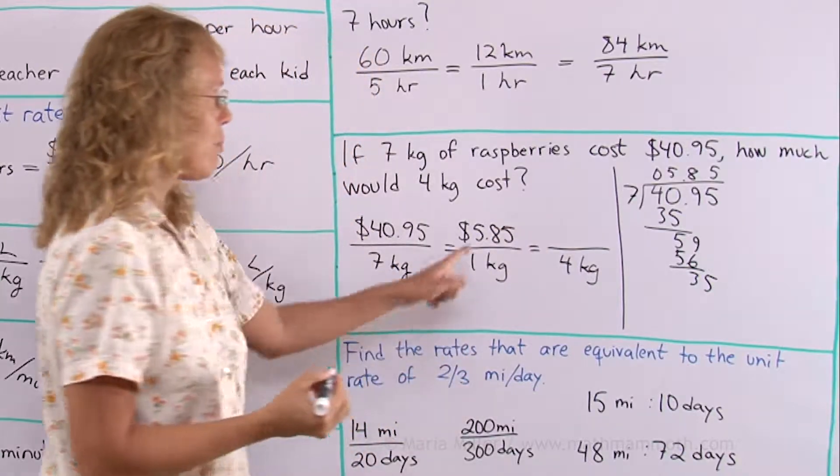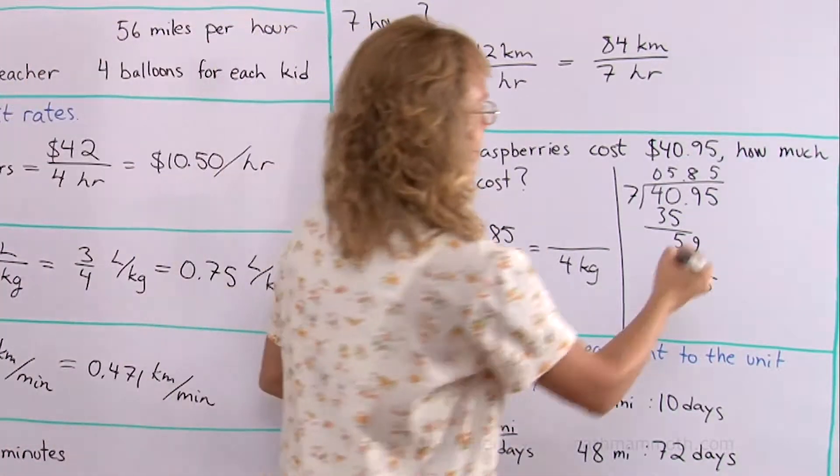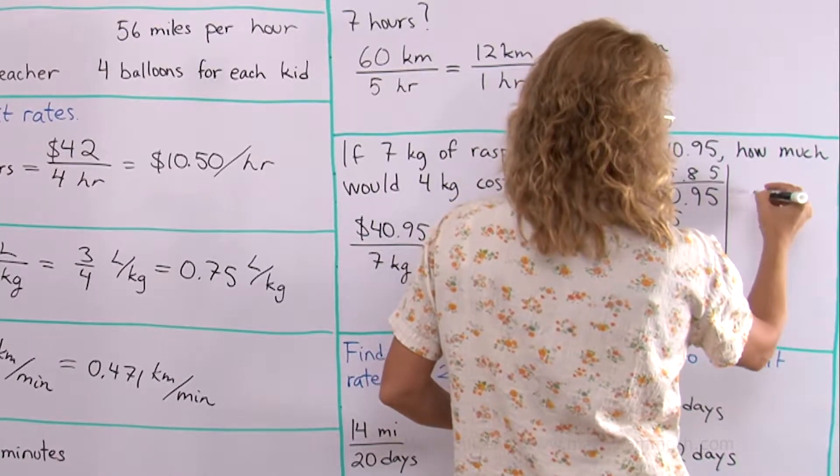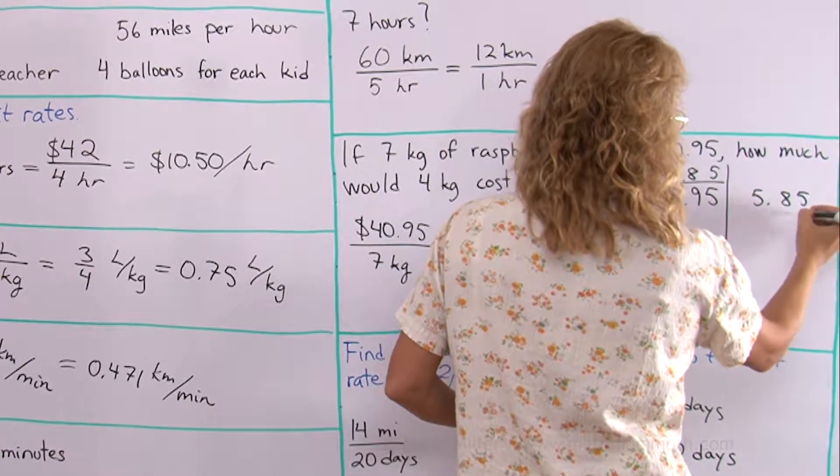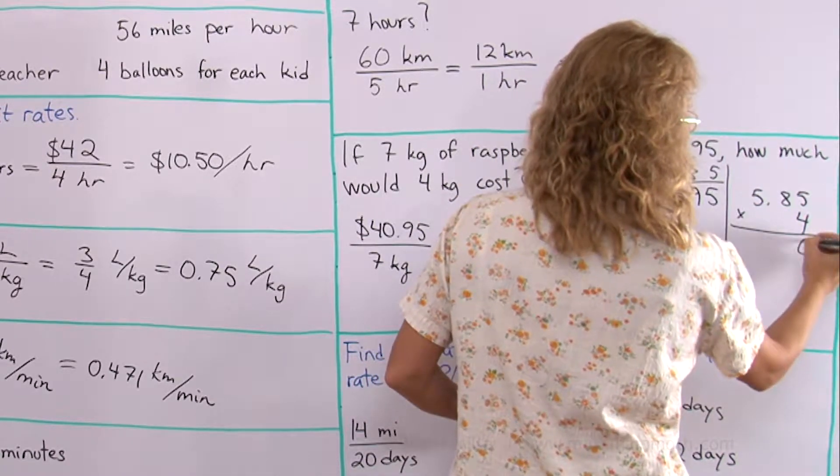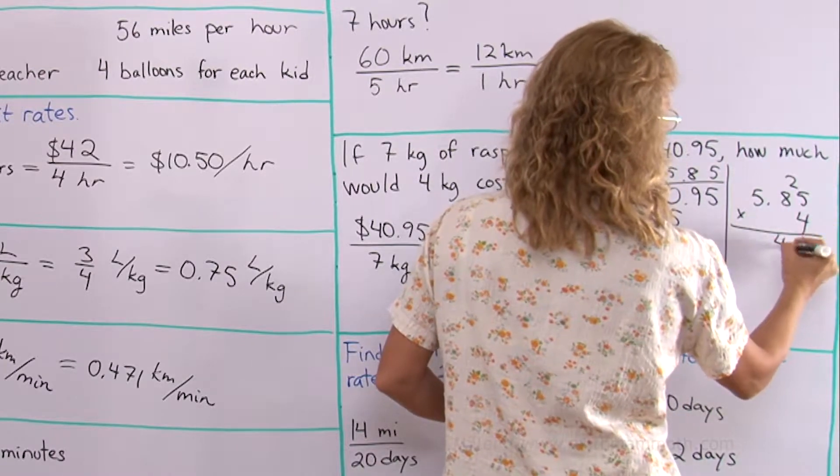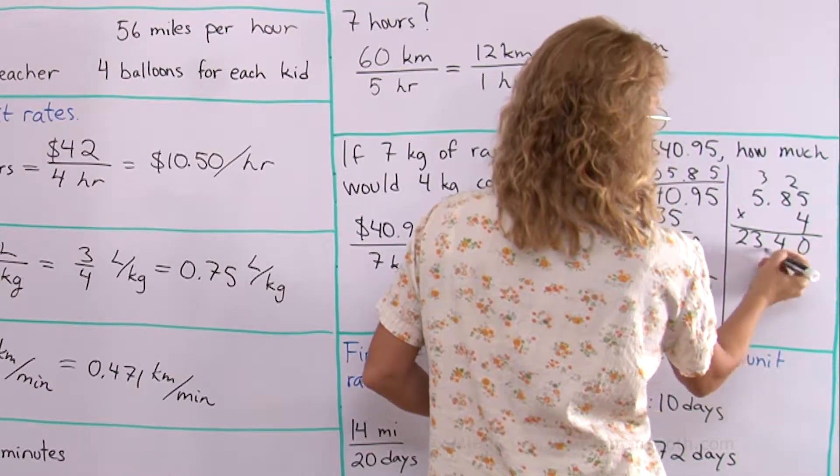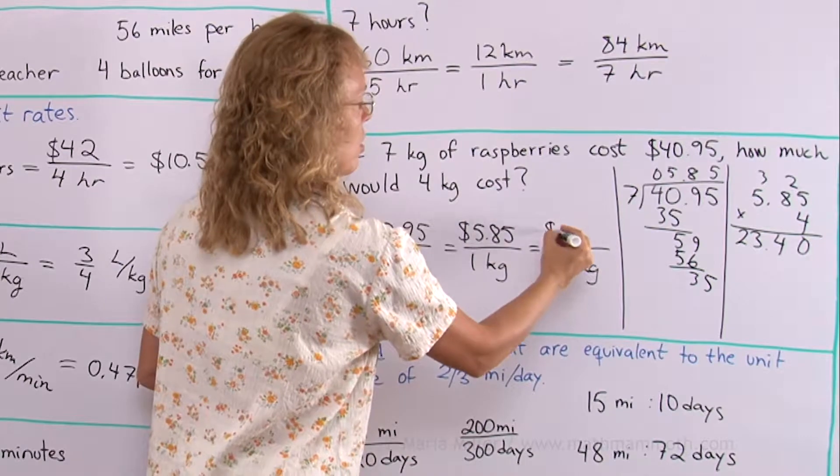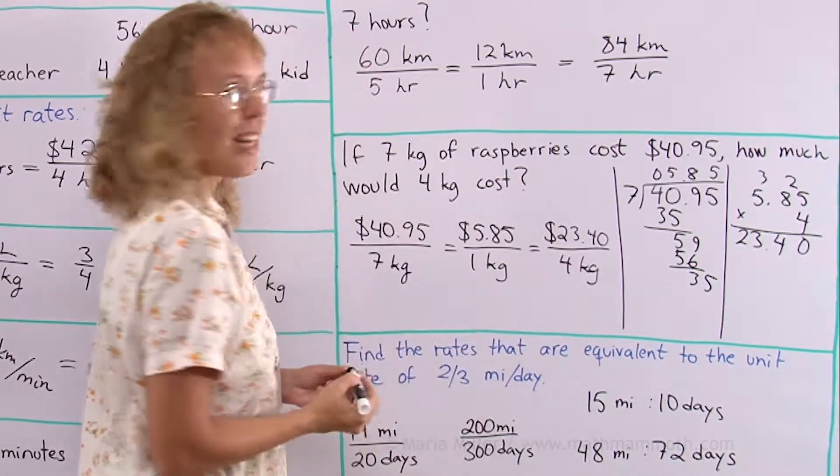Then we need to multiply that times 4. Another calculation here on the side. 20 and then 34 and 23. So $23.40 is the answer.